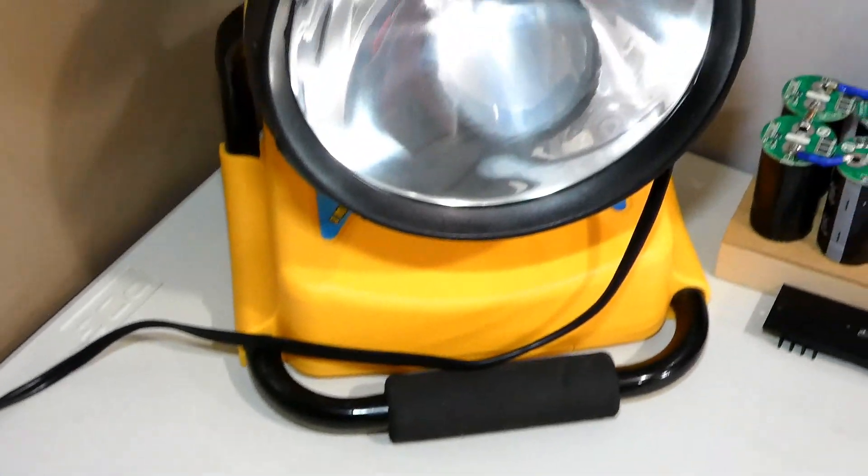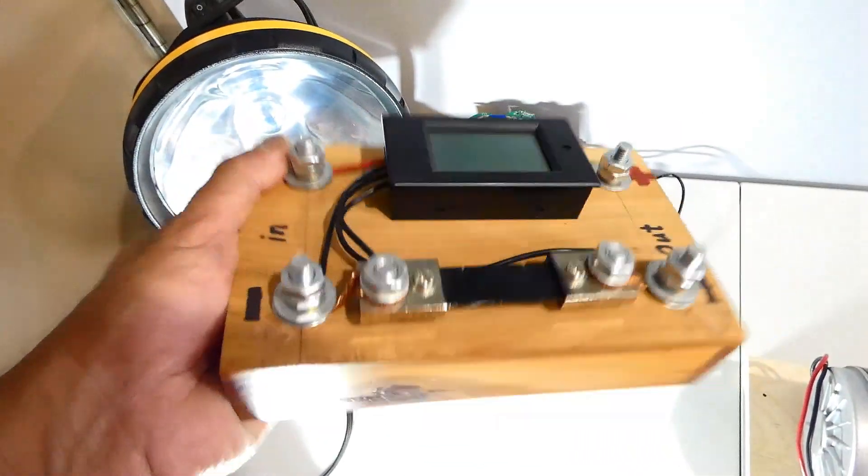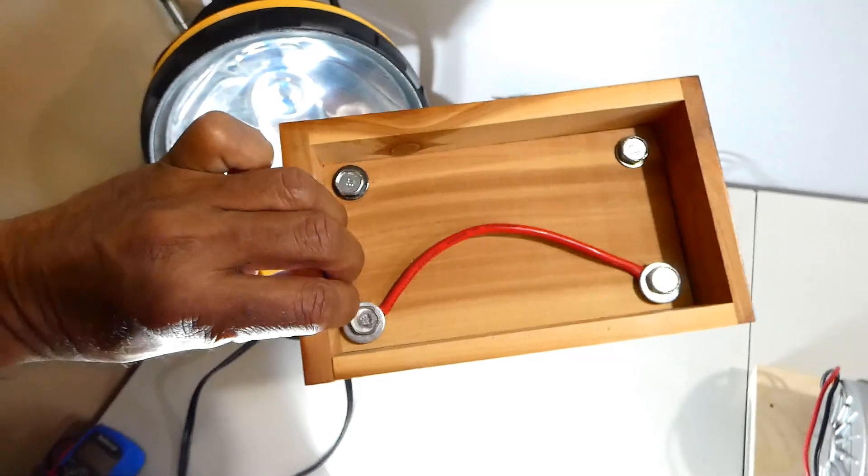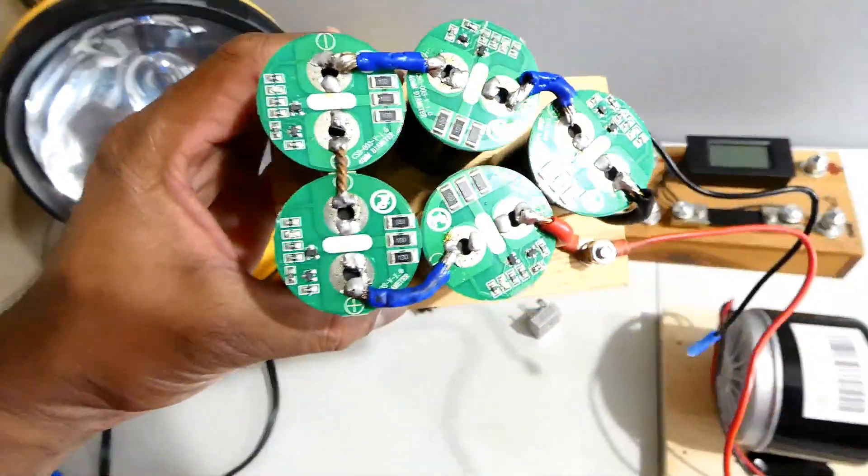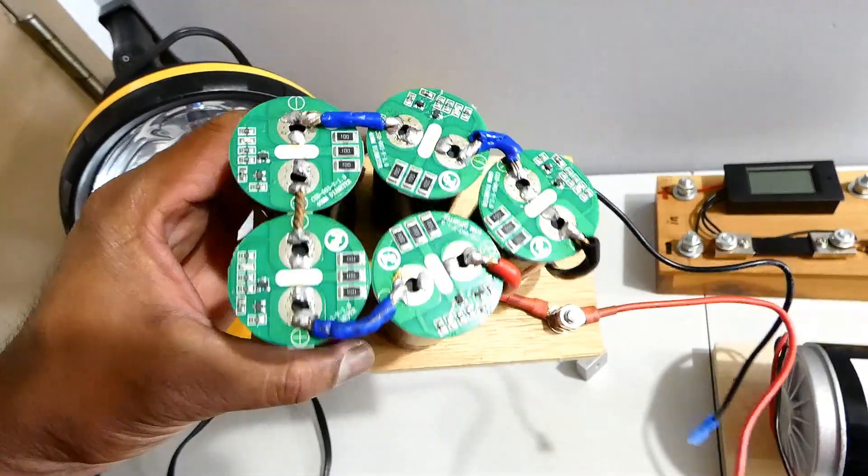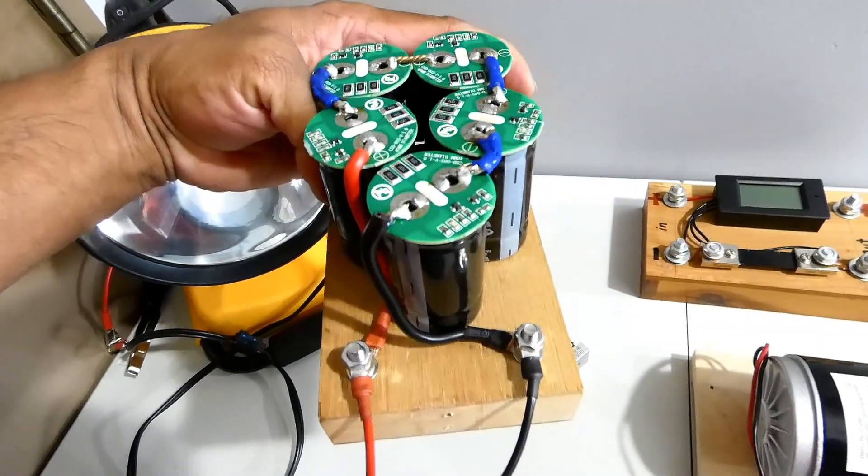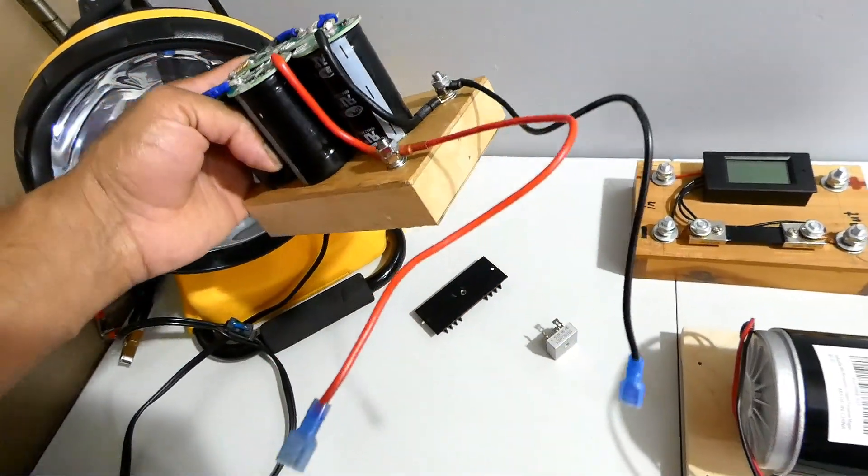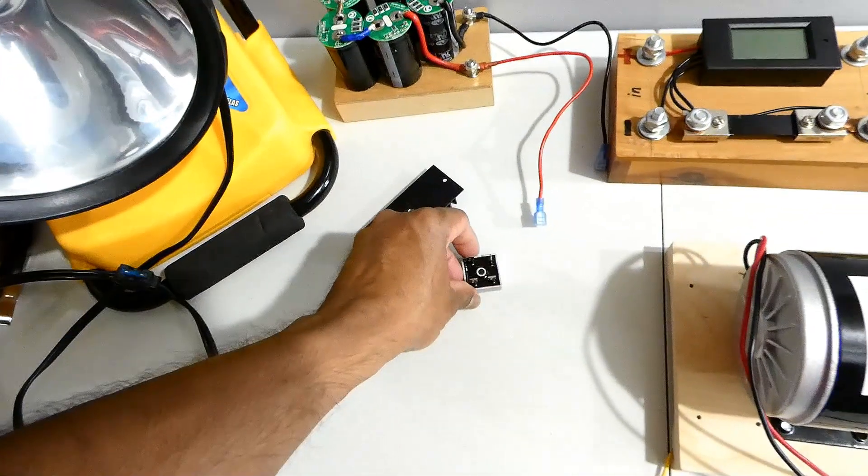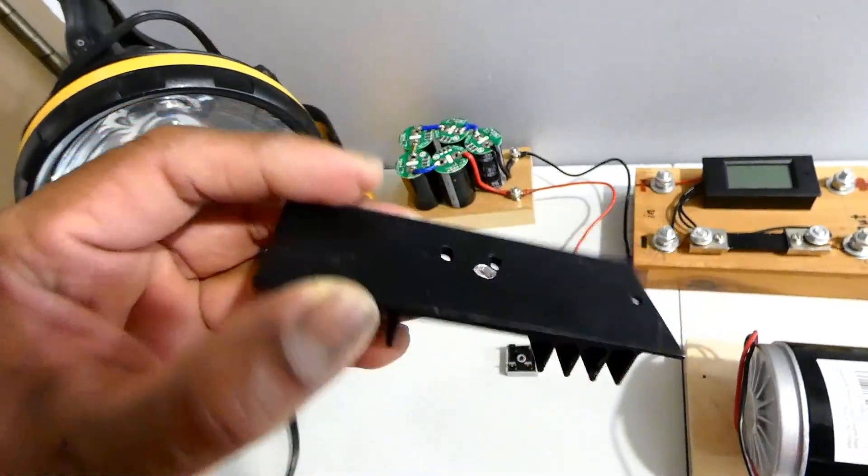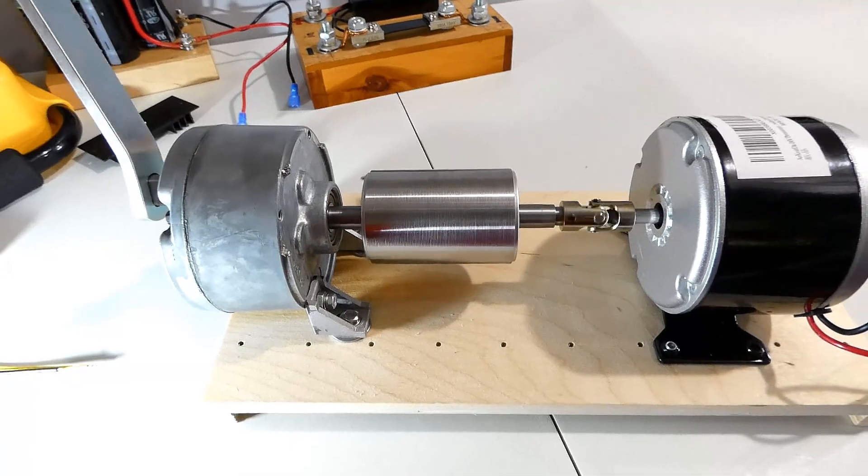This is a super bright searchlight I'm going to use to test the hand crank generator. This is a DC ampere watt meter to test the generator. These are 500 farad, 2.7 voltage supercapacitors assembled in series to make a 13.5 voltage power bank. This is a bridge rectifier and an aluminum heatsink for the bridge rectifier. Let's see how this generator works.